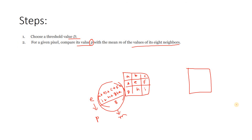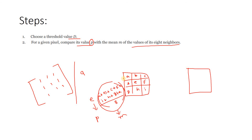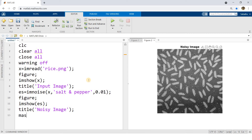Next, I need to compare each pixel with the average of its 8 neighbors, so I need to compute that average. I'll use the mean filter mask. The mask is: [1 1 1; 1 0 1; 1 1 1] divided by 8 — this excludes the central pixel and averages only the 8 surrounding neighbors. Then apply the filter: filt = imfilter(im2double(es), mask).